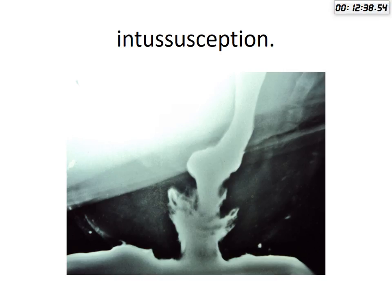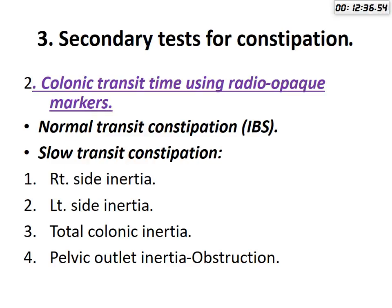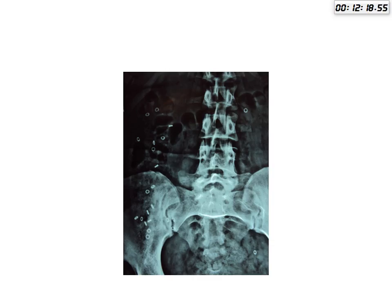This is intussusception. The secondary tests for constipation include colonic transit time using radioactive material. Normal transit constipation in IBS and slow transit constipation may be right-sided inertia, left-sided, or total colonic inertia, or pelvic outlet obstruction. This shows radio-opaque markers still in the right side and just two remaining in the left side.